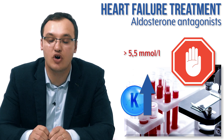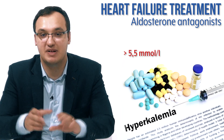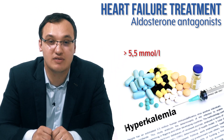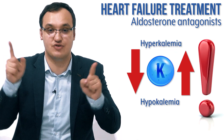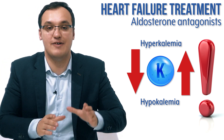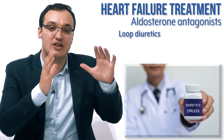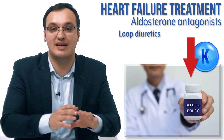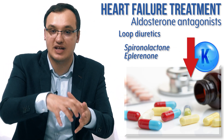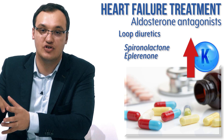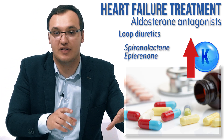If potassium rises above 5.5, we need to stop the aldosterone antagonist, because above 5.5 we are already in the range of moderate hyperkalemia, which is very dangerous. So both sides are dangerous — hypokalemia and hyperkalemia. Loop diuretics, given to all heart failure patients, cause hypokalemia, and therefore we give aldosterone antagonists to normalize the level. But if we give too much, we get into the hyperkalemia region. So we need to carefully adjust the doses of both aldosterone antagonists and loop diuretics.